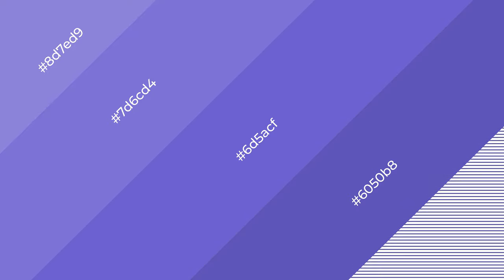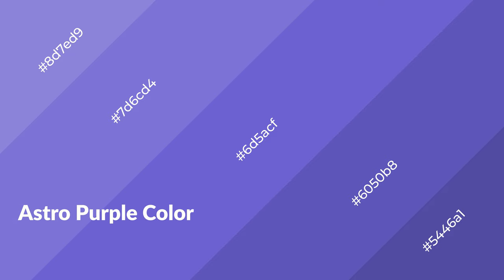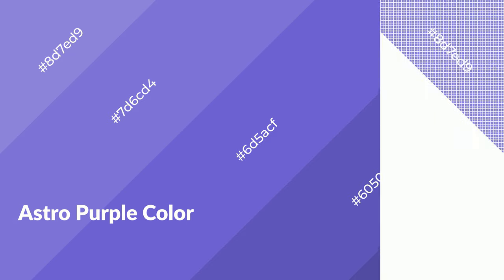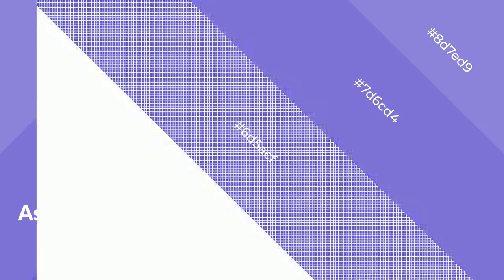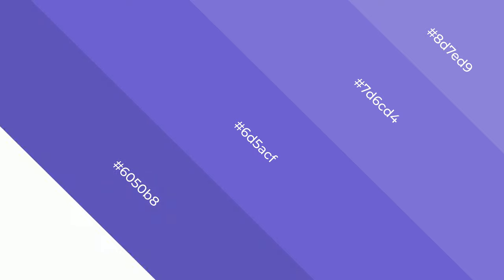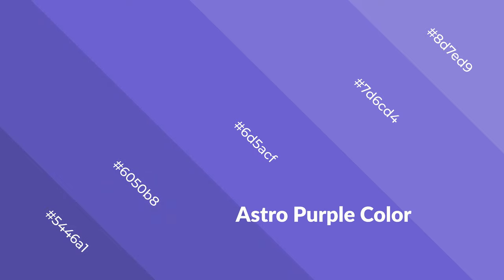Astro purple is a cool color and it emits calming, serene, soothing, refreshing, spacious, unwinding, peaceful, and relaxed emotions. Cool colors are like water, ice, sky, grass, soft, and snow. You can see them used in baby products.